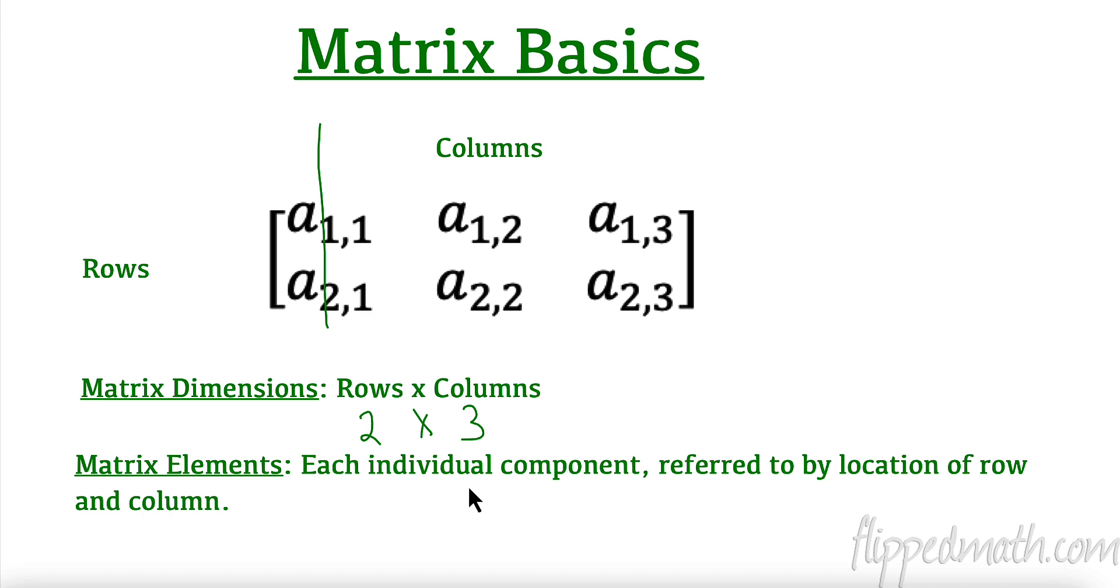Alright, matrix elements are each individual component and it's referred to by location of row and column. So for example, right here, this is an element. That is the first row, first column. This is an element, second row, second column. Second row, third column. Everything has its own element. So this is a 2 by 2 matrix, and we could say that the number 2 here is in the second row, first column. So it would be the second row, first column element.